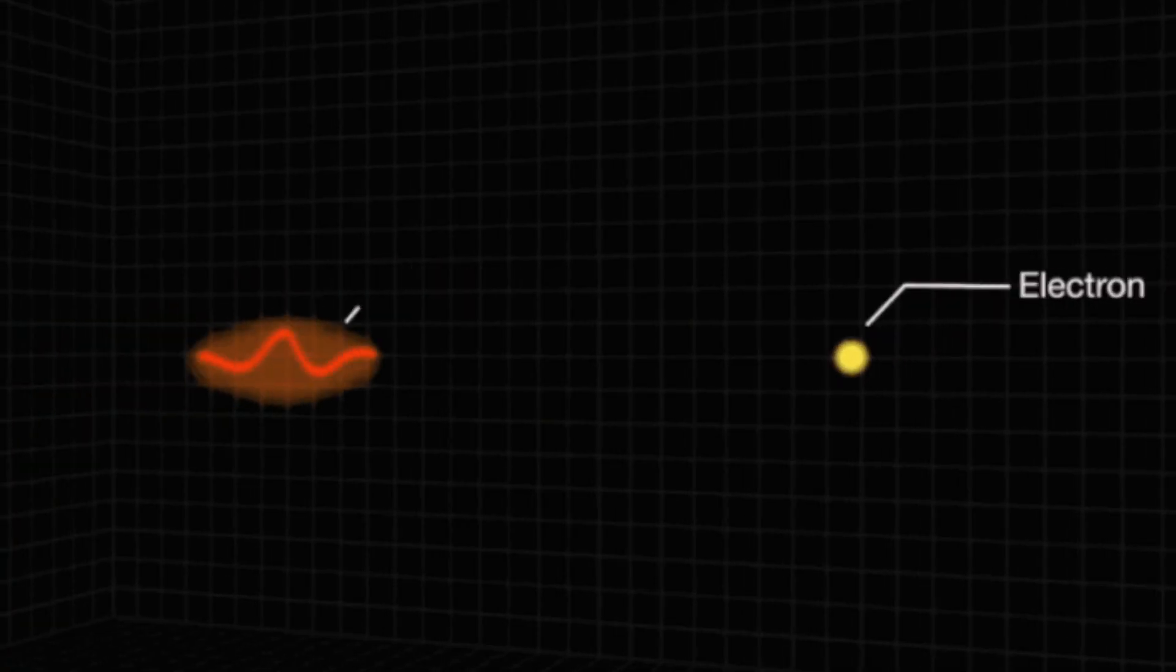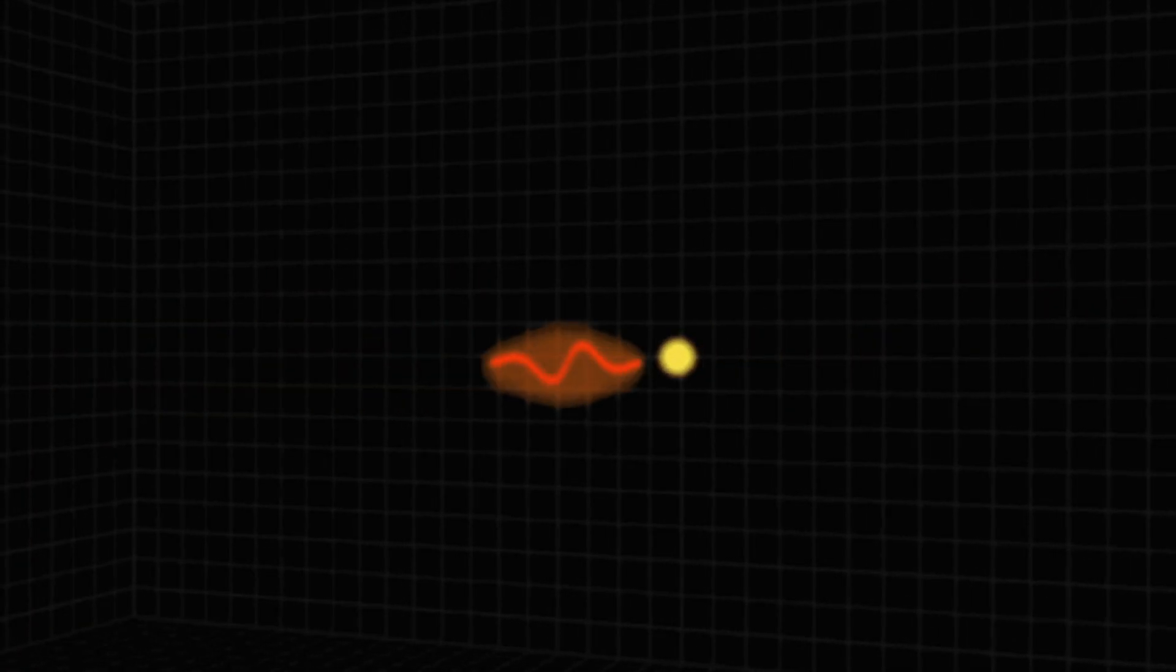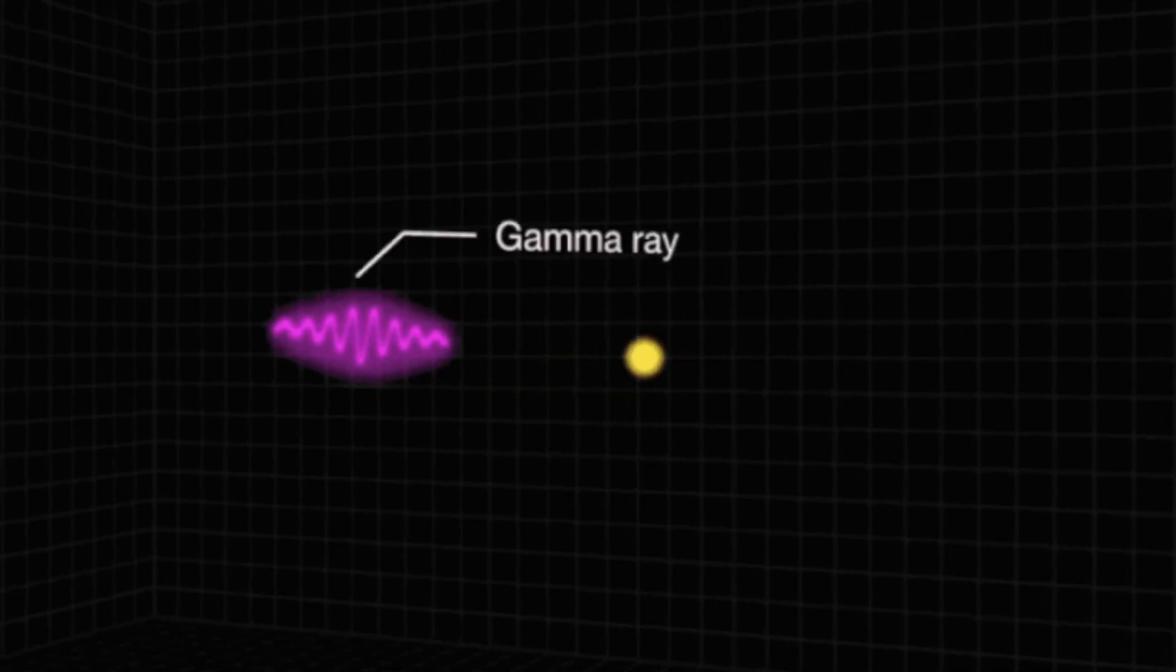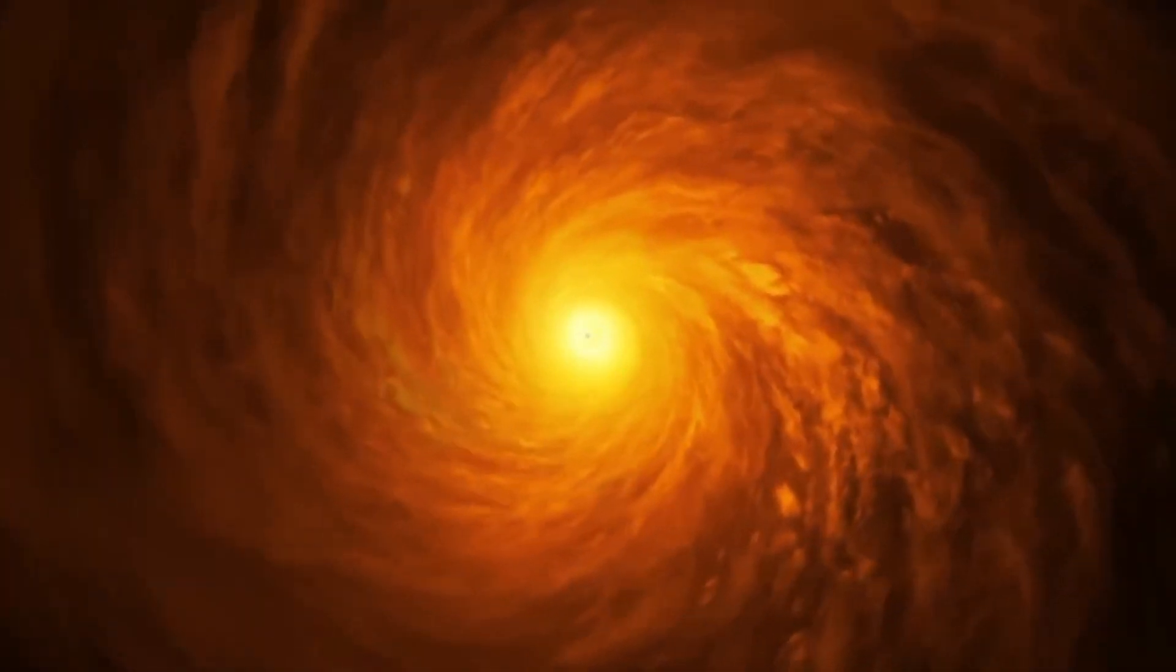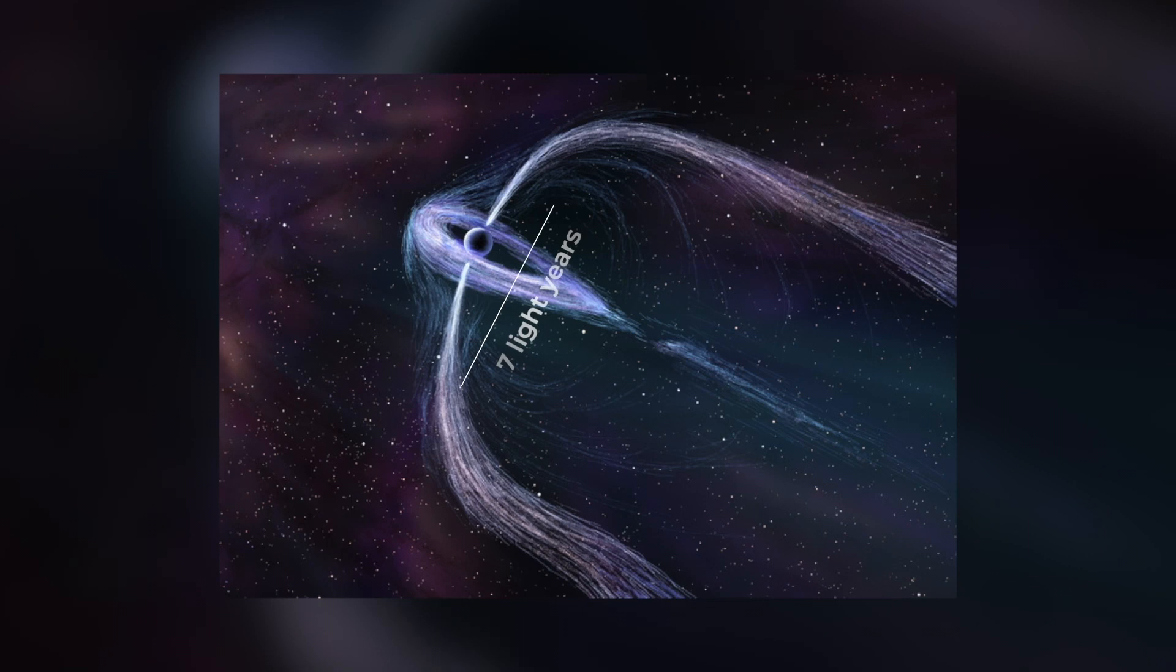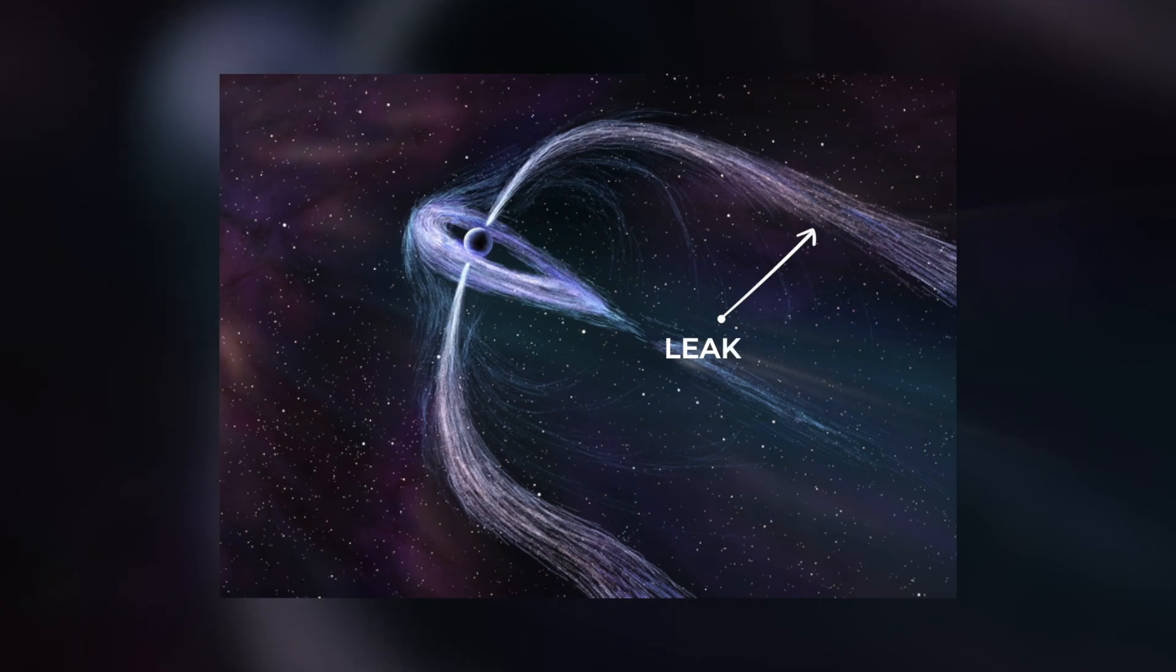The particles detected include electrons as well as its antimatter counterpart positrons. But what makes this pulsar so special is that the nearby 7-light-year-long jet actively leaks the high-energy matter and antimatter particles out into deep space.